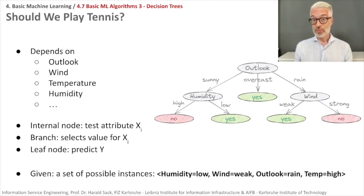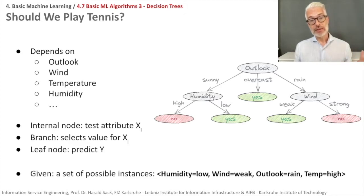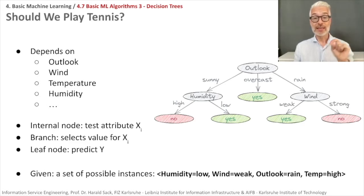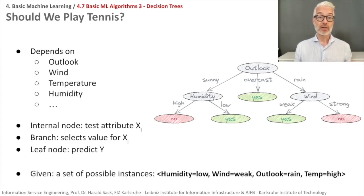The toy problem we want to solve today is: should we play tennis? We have features like the outlook of the weather, wind data, temperature, and humidity. In a decision tree, we distinguish so-called internal nodes where we perform the test — shown here in gray — and leaf nodes where the decision is made. After an internal node, you branch by selecting a specific value for your feature. For outlook, you might select sunny, overcast, or rain; for humidity, you can select high or low.